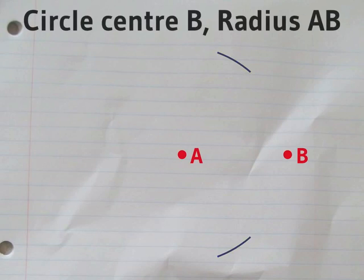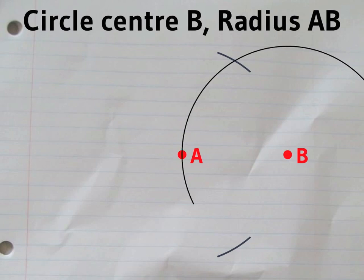Without adjusting the compass, draw another circle, this time with center B.